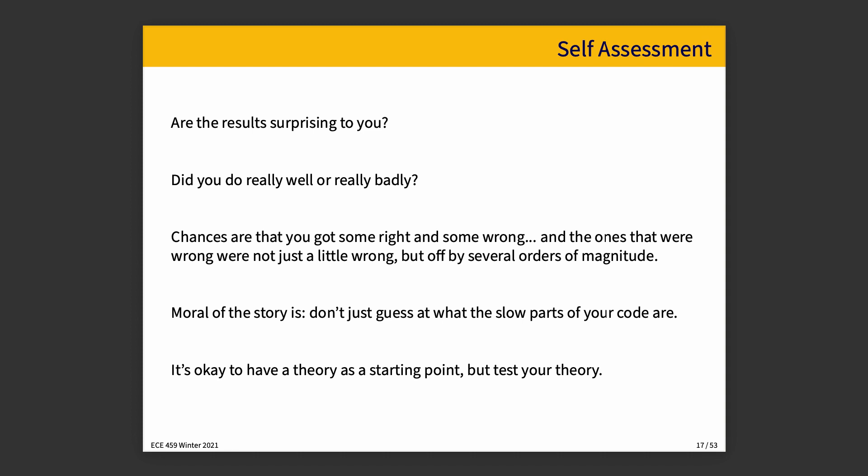I haven't kept good statistics from previous terms, but in most terms when we do the exercise in class, as we move through it, we get a few right and a few wrong, and around halfway to two-thirds through, it starts to become apparent there's a likelihood we might get less than half right. Be honest with yourself about how you did. The lesson: it's okay to have a theory, but you've got to test it. What you intuitively think is slow might not be slow; what you intuitively think is fast might not be fast. You'll get better results if you test your theory and actually get some numbers.